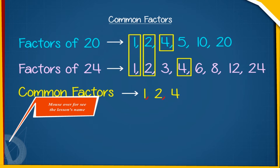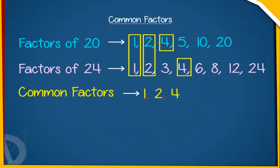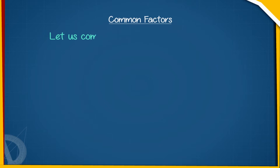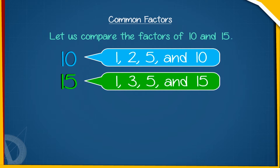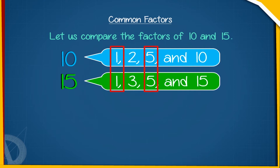Common Factors. When we factorize two numbers, we may find some factors common for both the numbers. These factors are called common factors. Let us compare the factors of 10 and 15. The factors of 10 are 1, 2, 5, and 10. The factors of 15 are 1, 3, 5, and 15. The numbers 1 and 5 are common factors of both 10 and 15. Remember, common factors of any two numbers are limited.